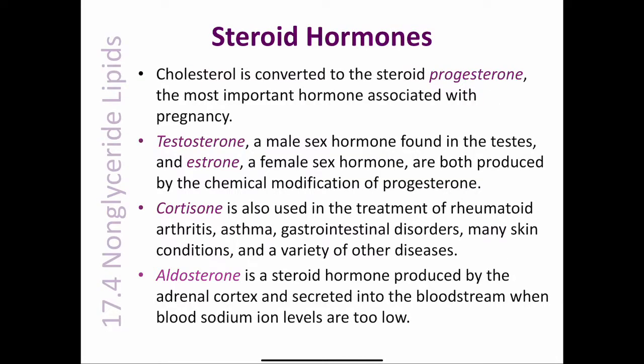Testosterone, a male sex hormone found in the testes, and estrone, a female sex hormone, are both produced by the chemical modification of progesterone. These hormones are involved in the development of male and female sex characteristics.